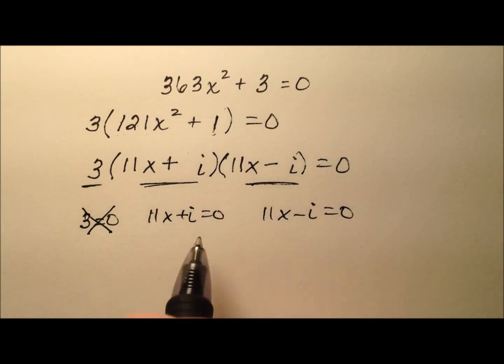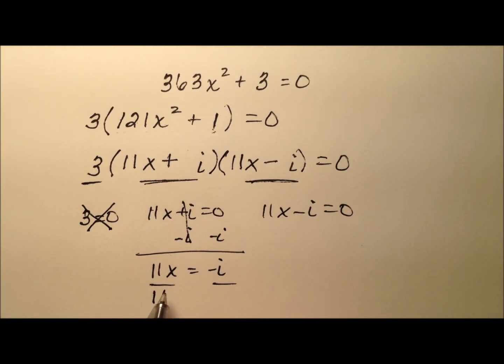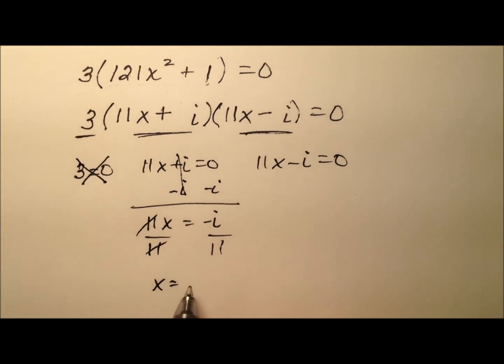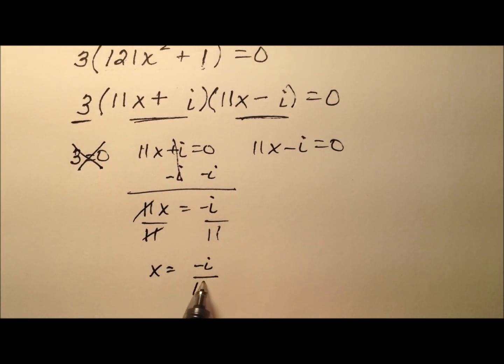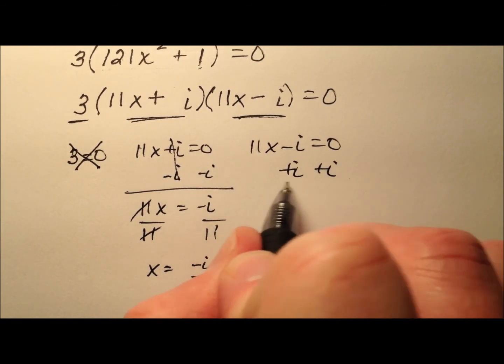And the next one, I can subtract i from both sides, 11x equals negative i, and when I divide both by 11, x in this case will equal negative i over 11.